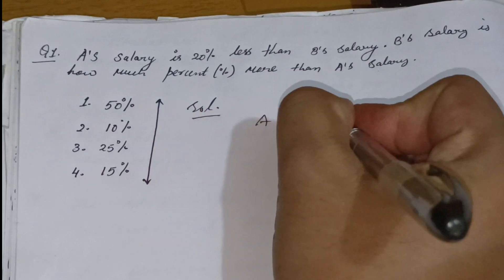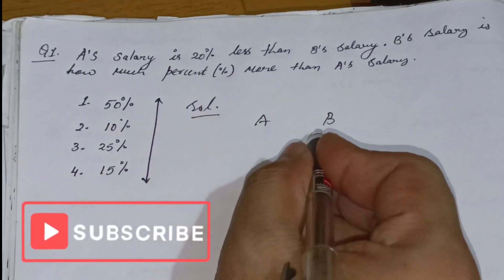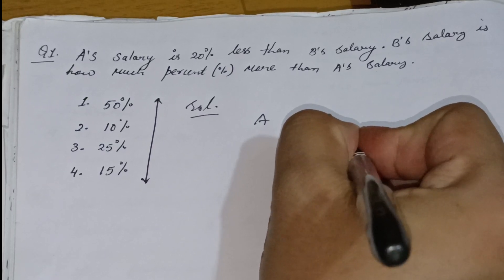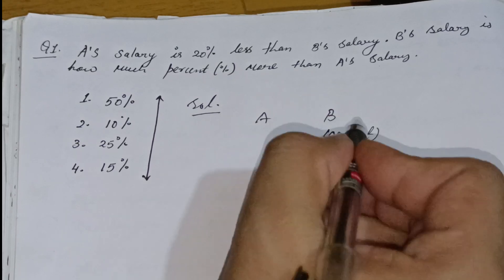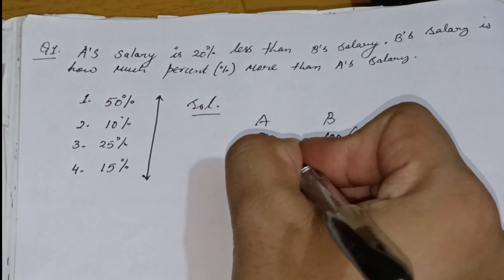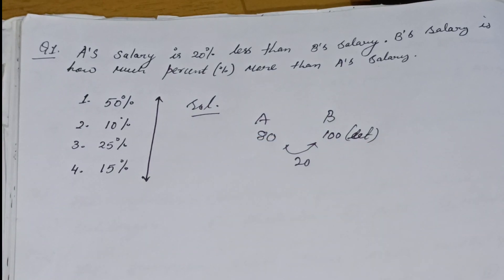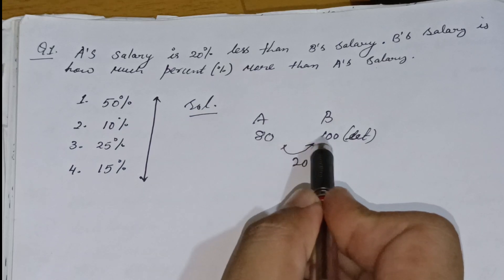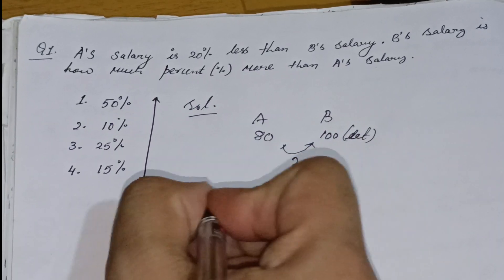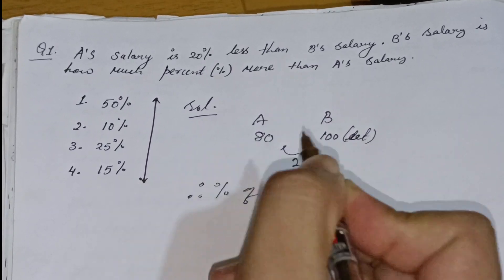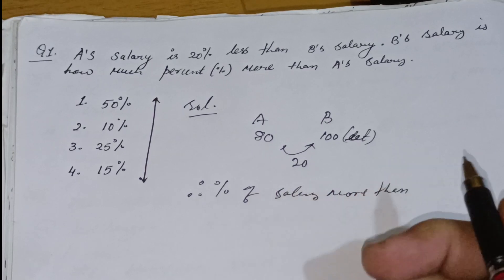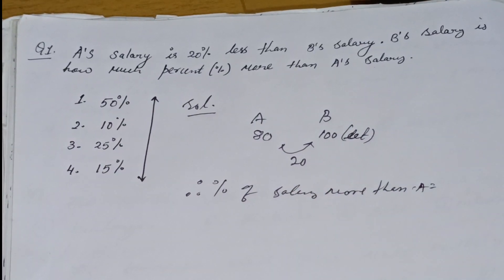A and B. A's salary is 20% less than B's. How much difference is 20% less than B's salary? B's salary is 100, so A's salary is 80, which is 20% less than B's salary.